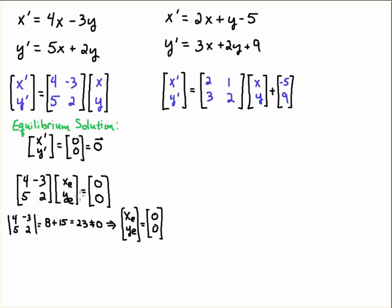That's actually fairly simple. If you remember your linear algebra, if you take the determinants of this matrix, you get 8 plus 15, which is 23, which is not equal to zero. That means that this matrix has an inverse. And if you apply the inverse to both sides, you would have the inverse matrix times the zero vector would give you zero. It would give you the zero vector.